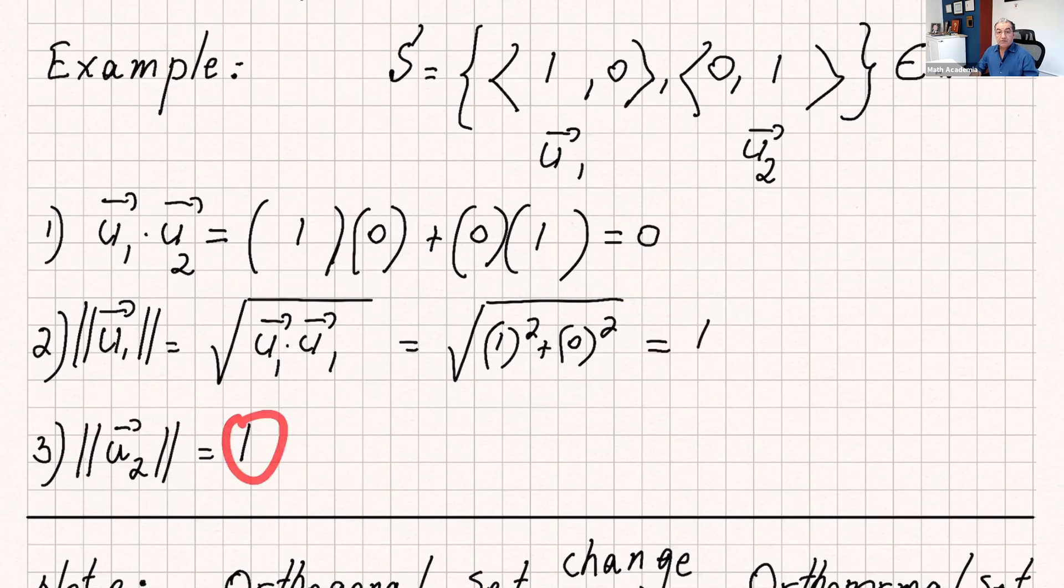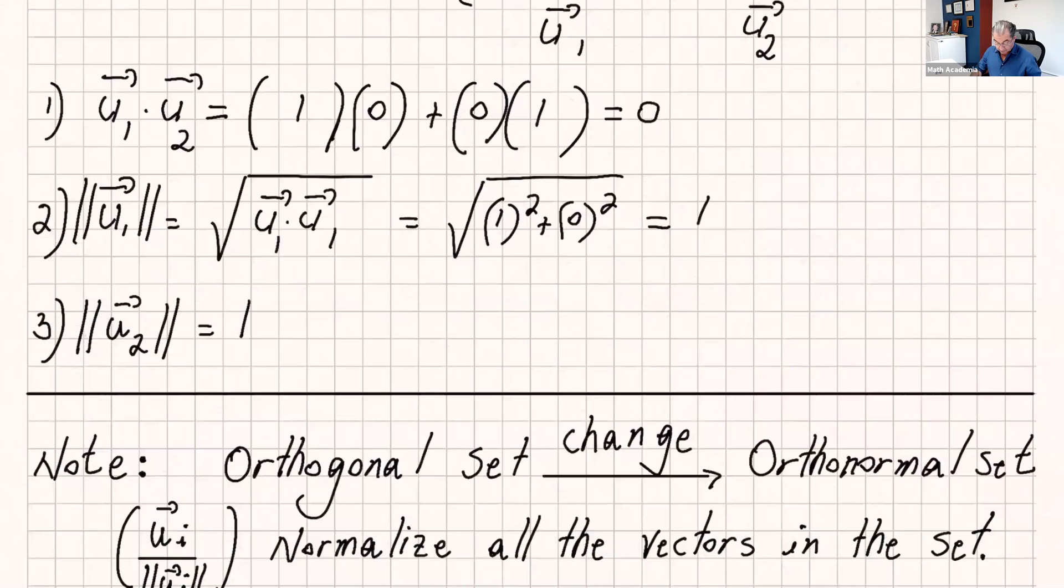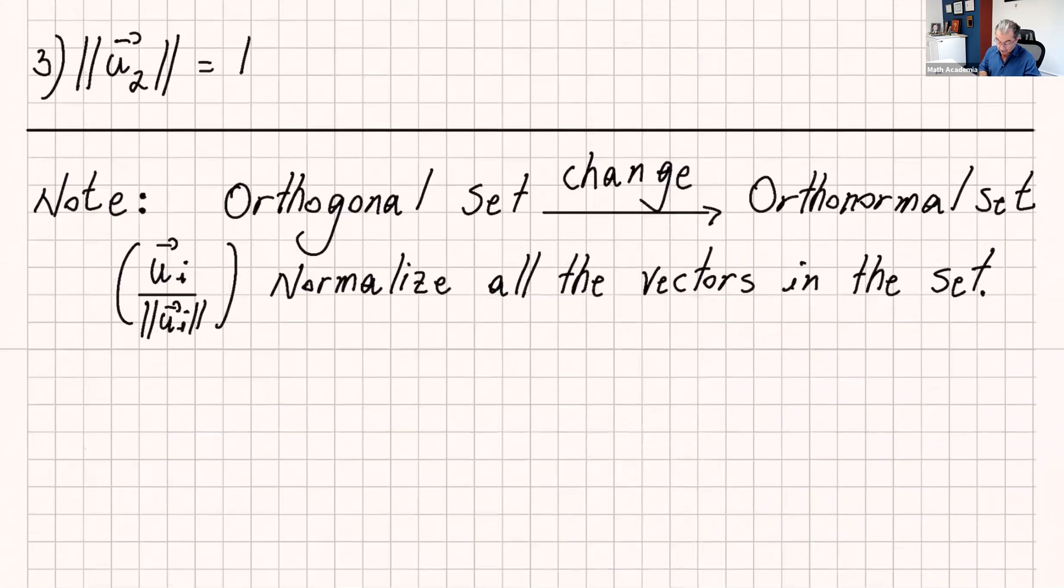Please know the orthonormal sets because later on we're gonna use this a lot in our next lectures. Now if you're given an orthogonal set, that means all the vectors are orthogonal to each other. If you want to change that to an orthonormal set, then you just normalize every single vector. To refresh your memories, normalizing a vector, you take that vector and divide it by its magnitude.